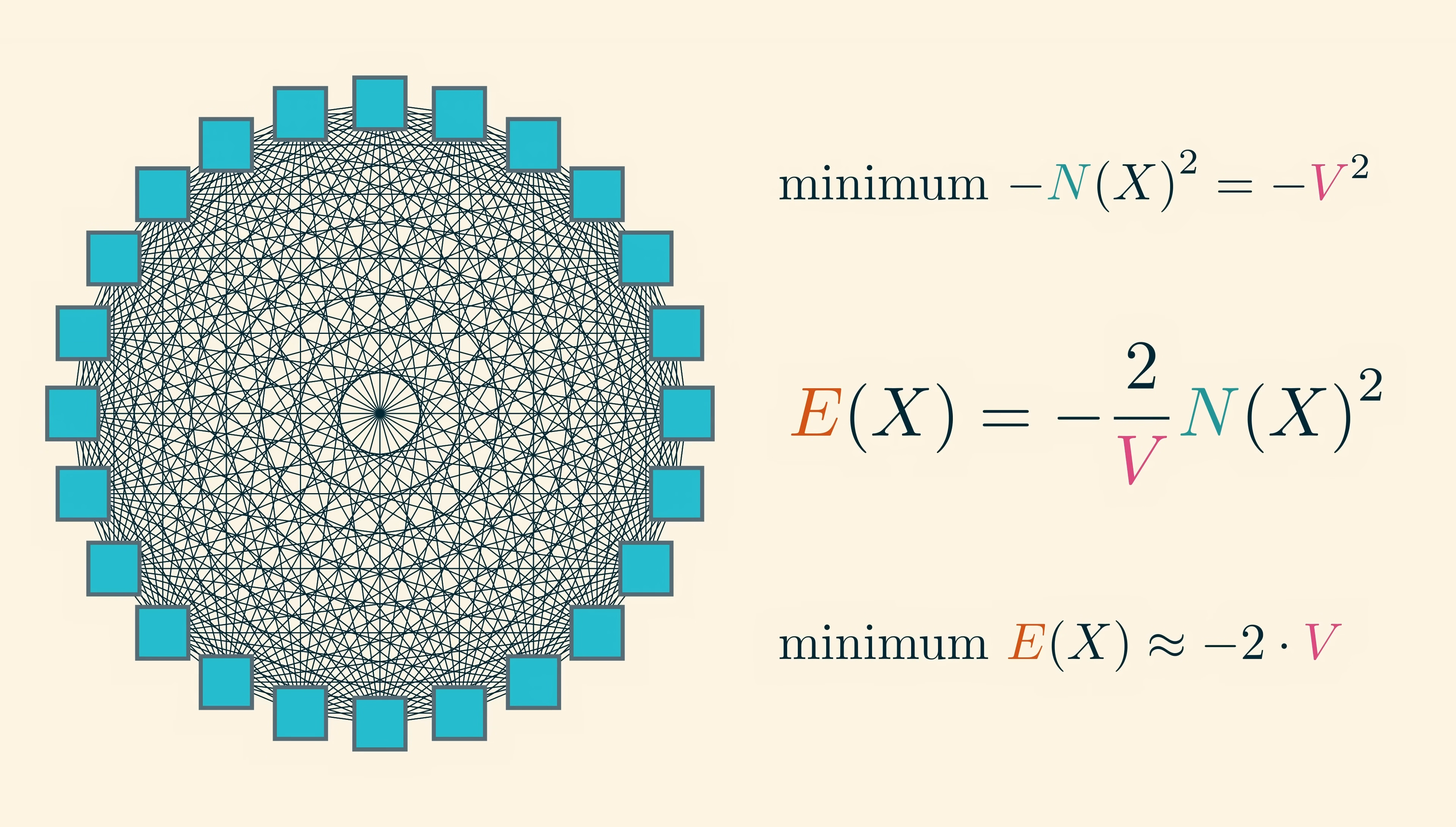In other words, the energy of a microstate is now minus 2 over v, times n of x squared, where again n of x is the total number of molecules in the microstate x. Since we have a division by v, the total number of pixels, this can be thought of as averaging, or taking the mean effect of all pixels on each individual pixel.